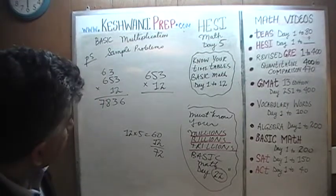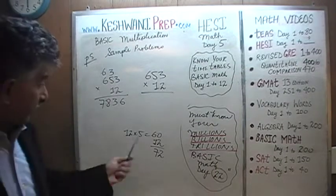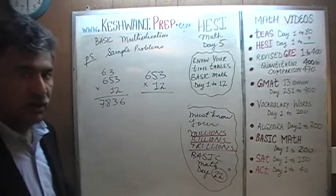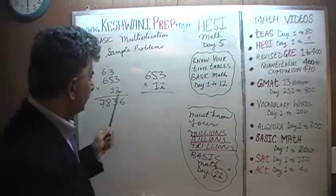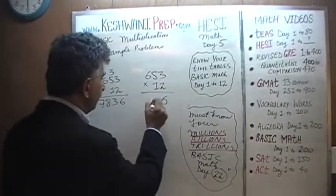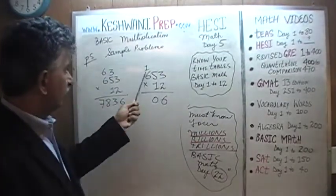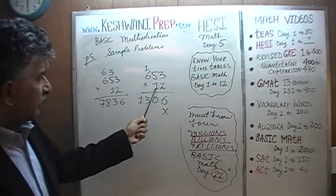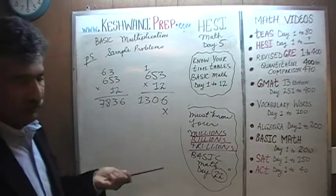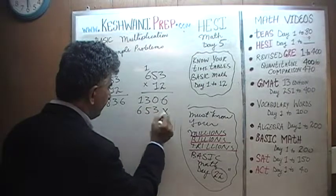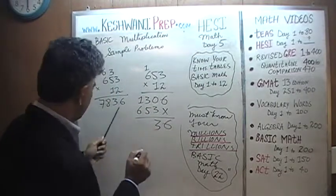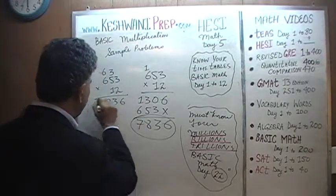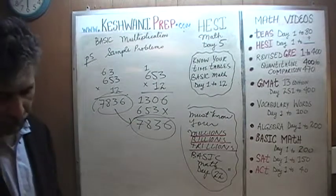Now let's do it the traditional way to confirm. Multiply by 2: 2 times 3 is 6; 2 fives are 10, carry 1; 2 sixes are 12, plus 1 is 13. Then multiply by 1 (the tens digit), giving 653. Adding them up: 1,306 plus 6,530 gives 7,836 — the same answer. We don't have to do it in two steps.